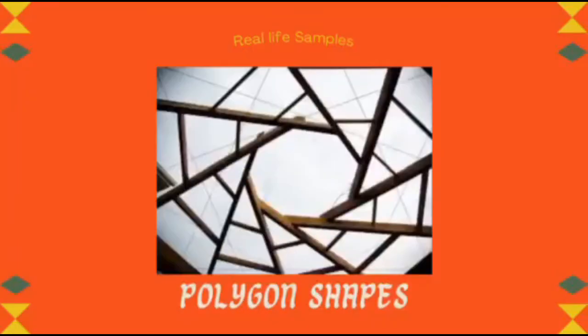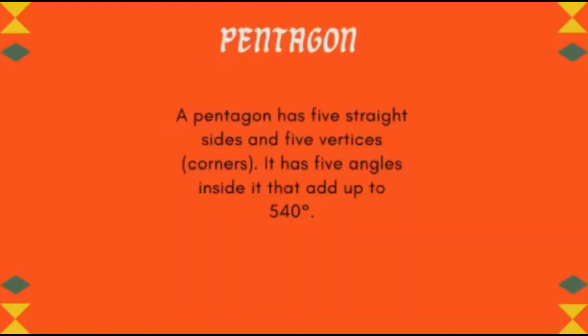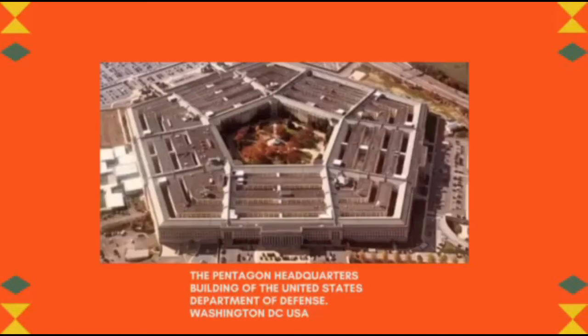Here are examples of polygon shapes. Pentagon: a pentagon has five straight sides and five vertices. It has five angles inside it that add up to 540 degrees.